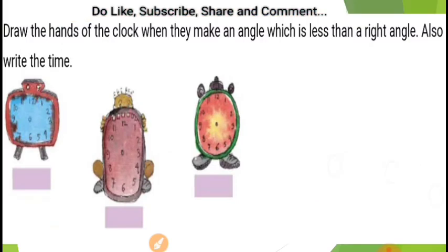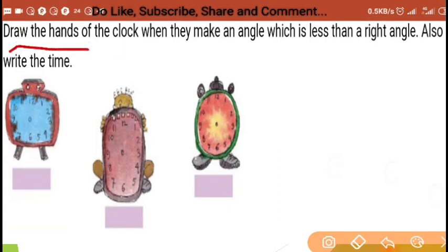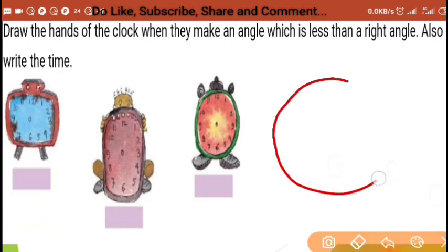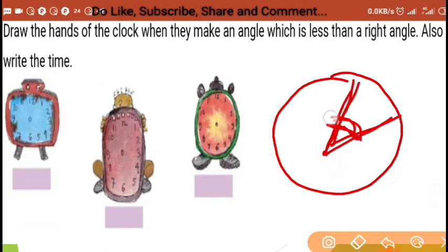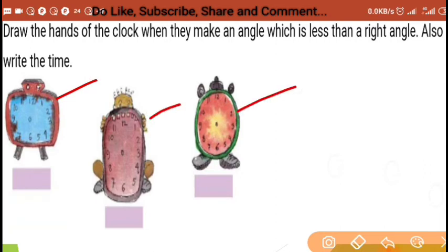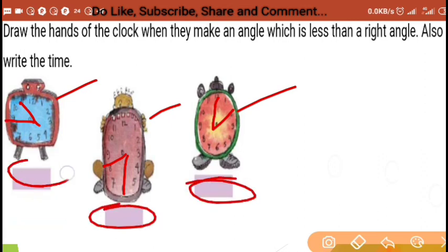On the same page, the next exercise says: draw the hands of the clock when they make an angle less than a right angle, and also write the time. For all three clocks you can make it on your own — it may be like this, less than a right angle. You have to tell the time also, and the angle must be less than a right angle. You will do that in your copy.